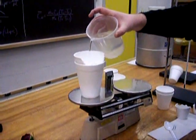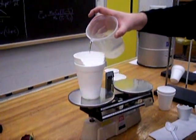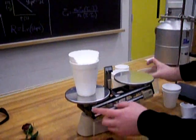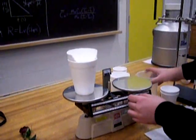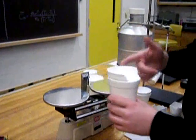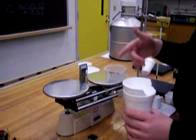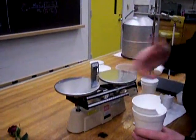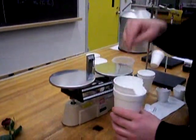You might overshoot it and have to remove a little bit. Okay, so find this mass. Okay, so just remember, we found the mass of the cup. Now, we found the mass of the cup plus the water. The difference is the mass of the water, which is what we need.